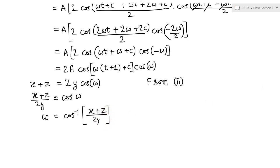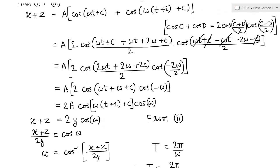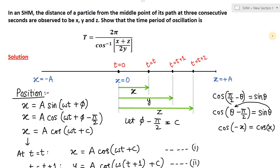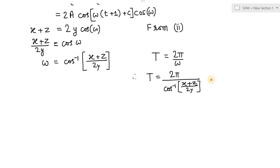We have to prove the time period. In SHM, the time period formula is T equal to 2π divided by ω. Therefore, time period T equals 2π divided by cos inverse of (x plus z) divided by 2y — exactly what we had to prove. Hence, we have proved the question.